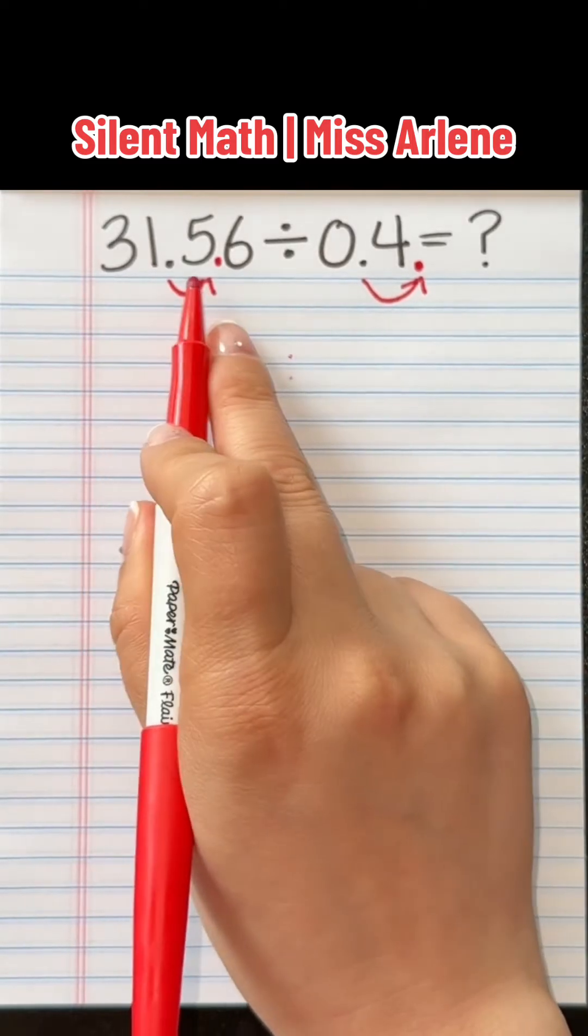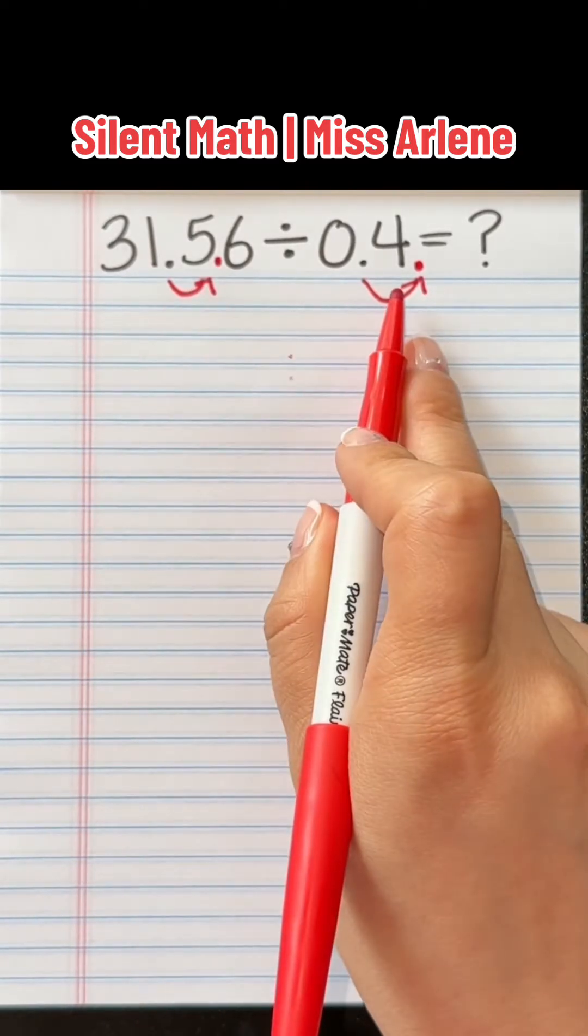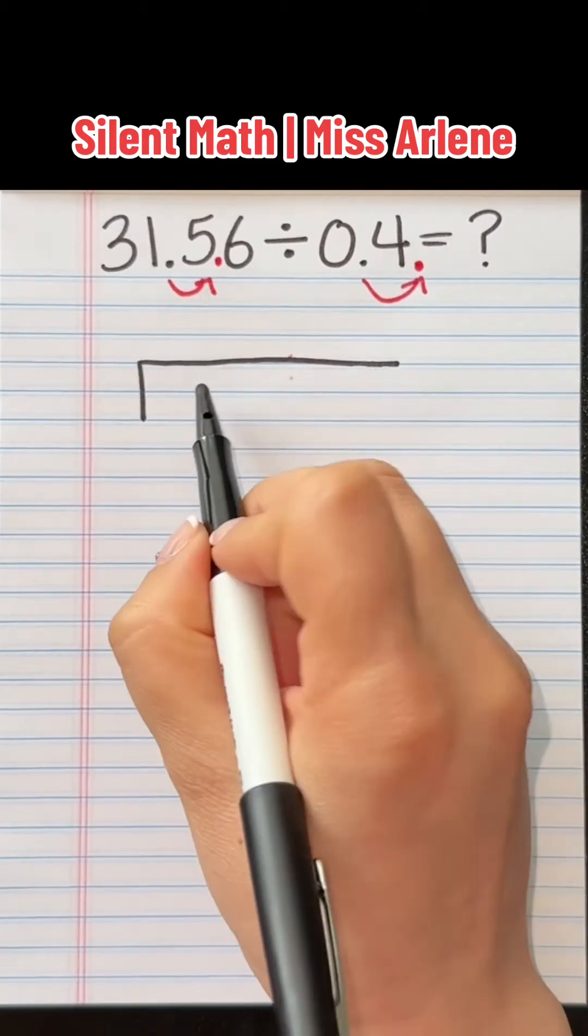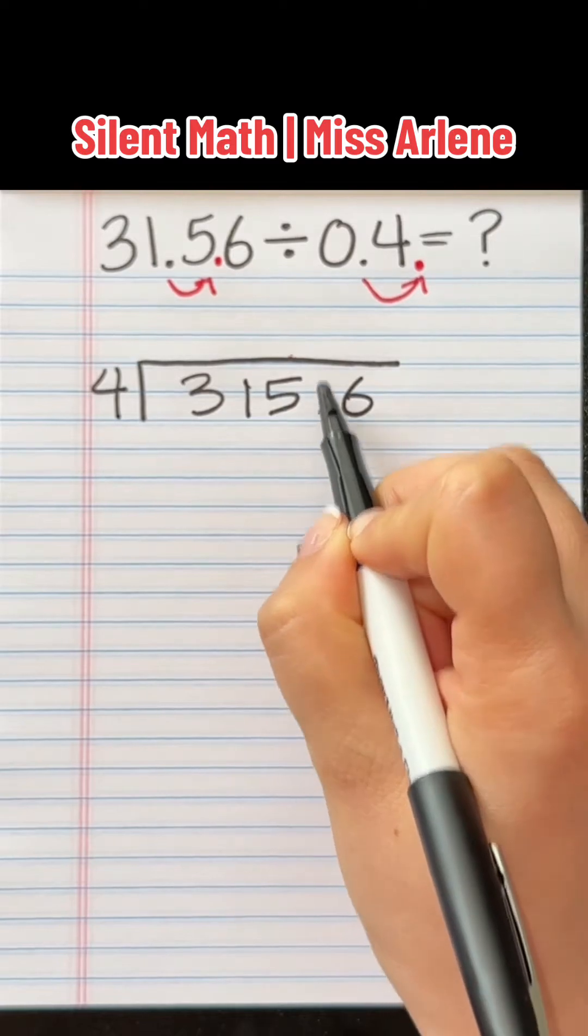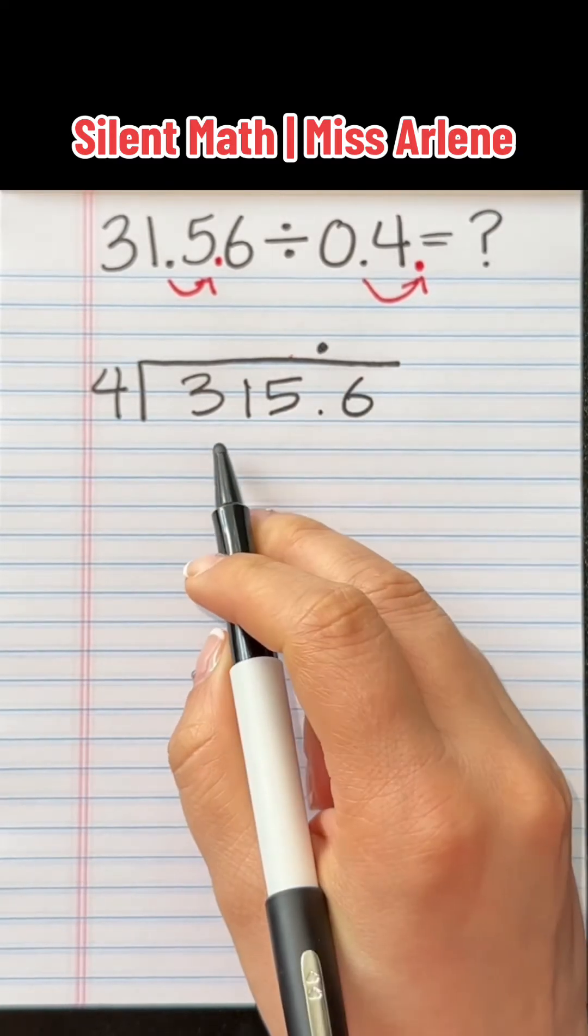So now the problem becomes 315.6 divided by 4. And this is how you set it up. The first value goes underneath and the second value goes on the side. And before you forget, bring up that decimal and we're going to divide.